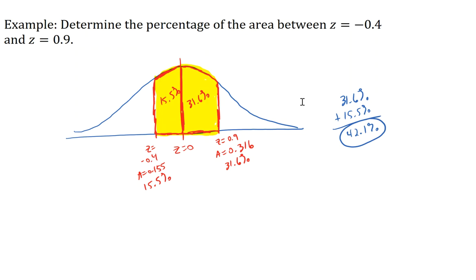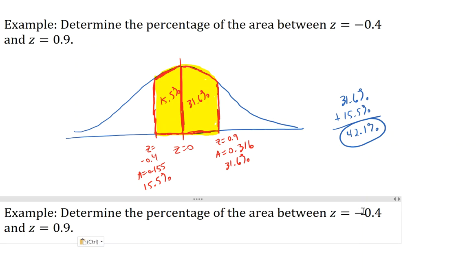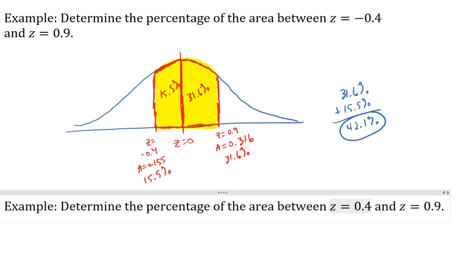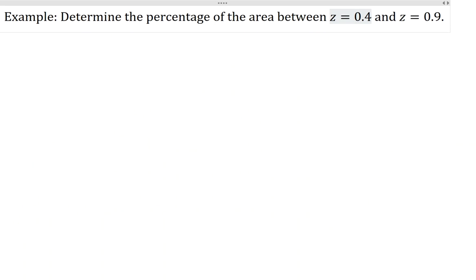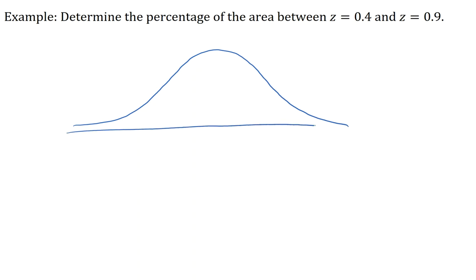Let's do a similar example. But let's change negative 0.4 to positive 0.4. The picture's going to look different now. So I'm going to draw my curve again, like I always do. Locate z equals 0, locate roughly z equals 0.4, and z equals 0.9.